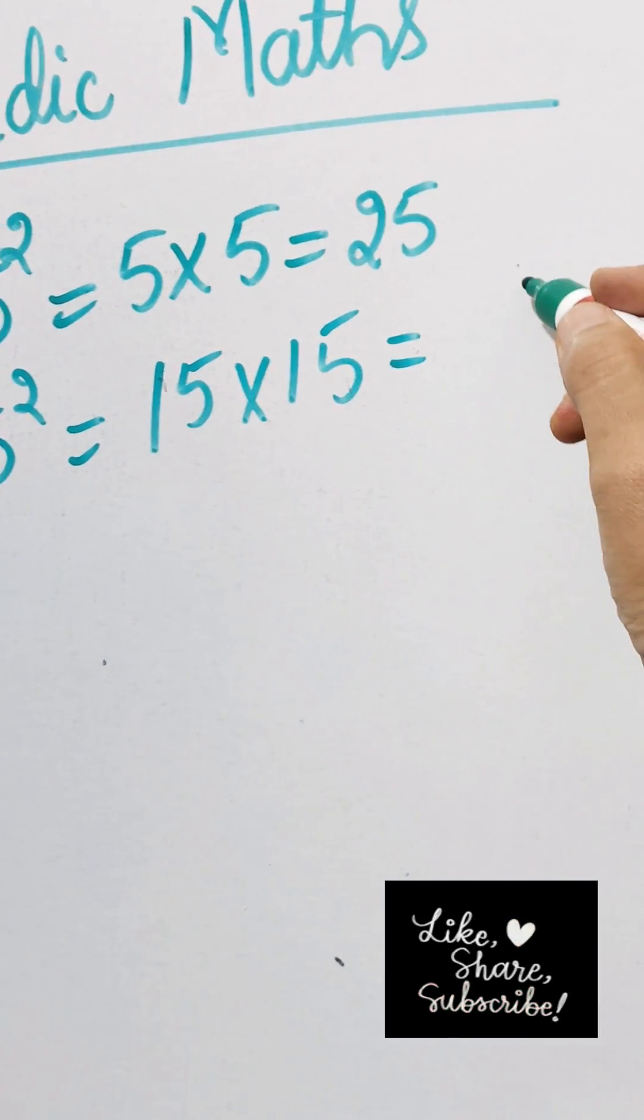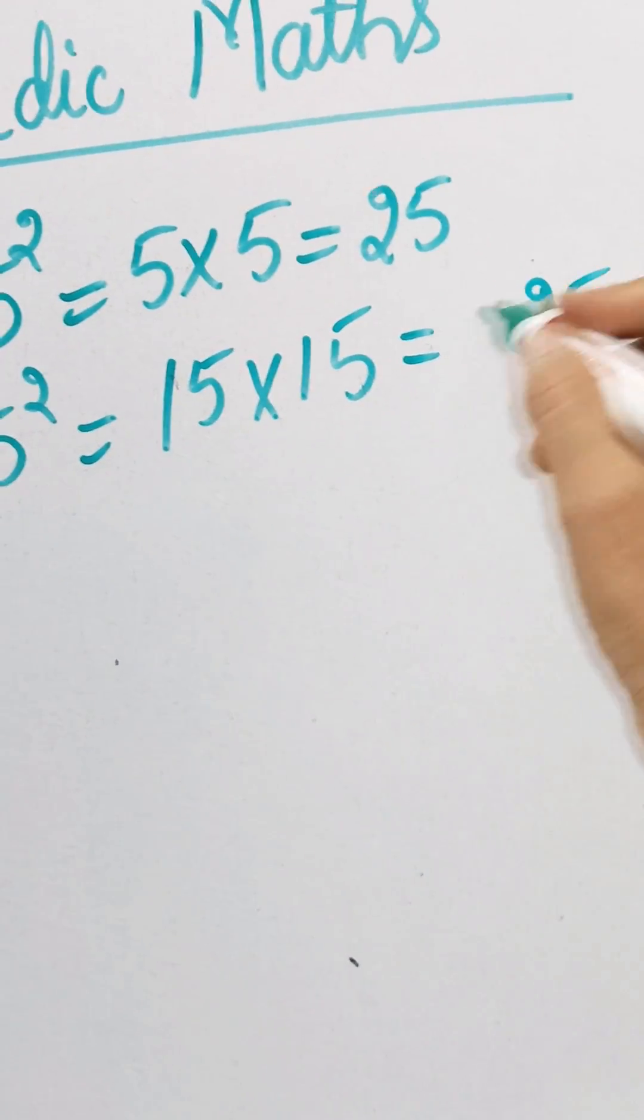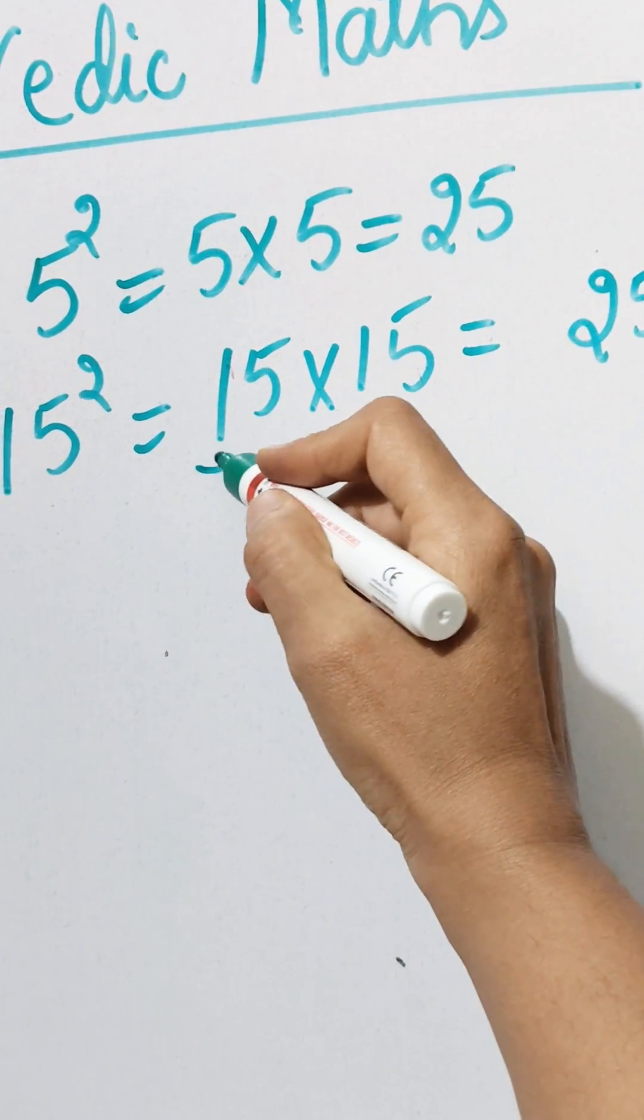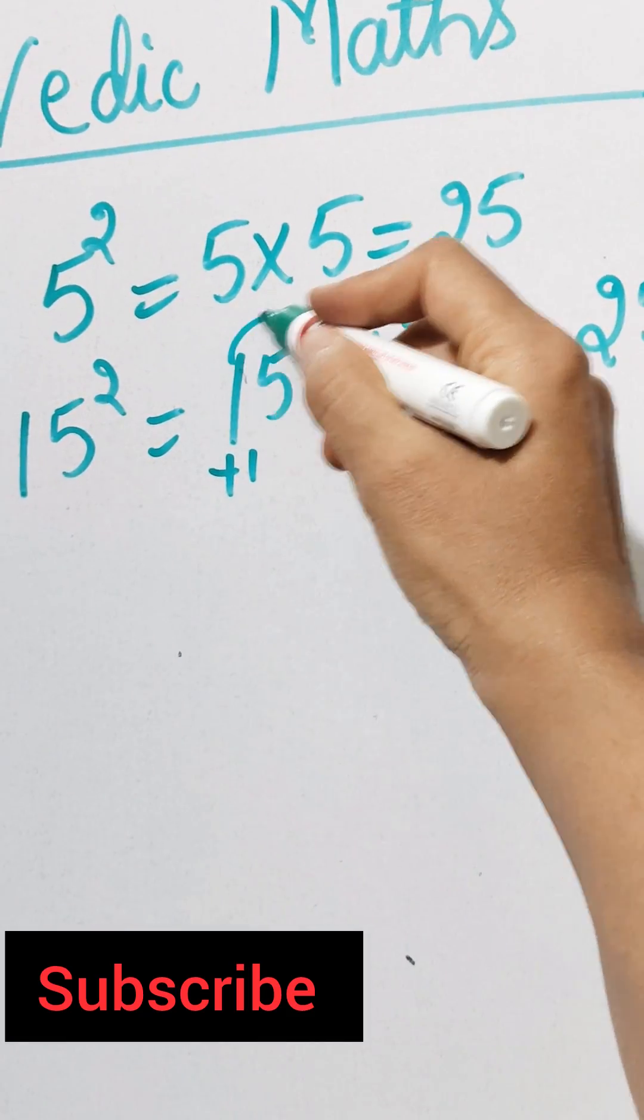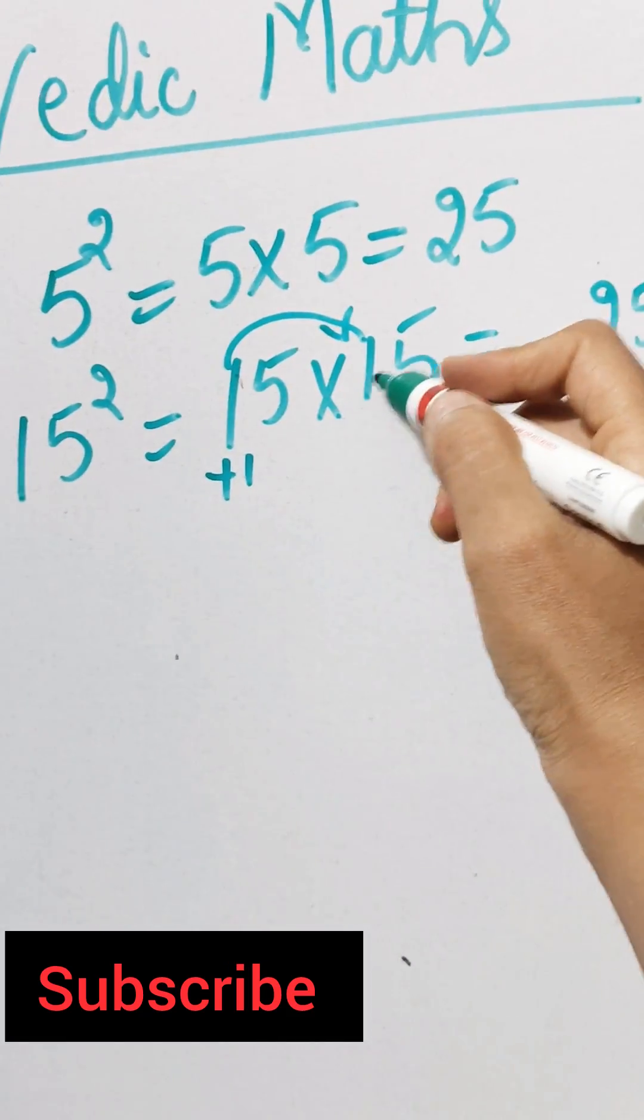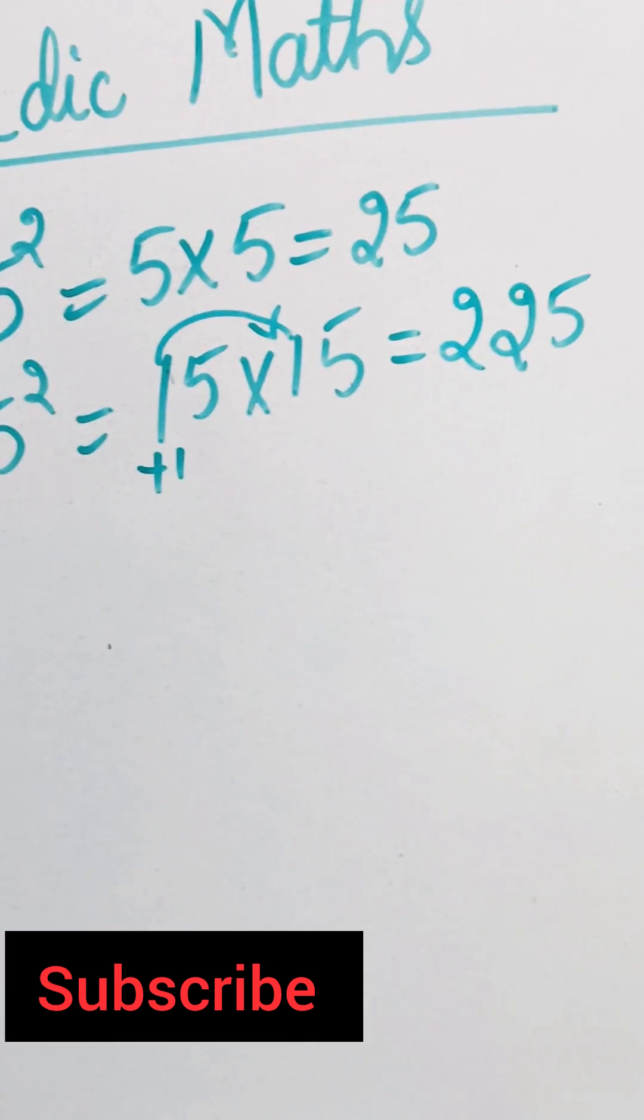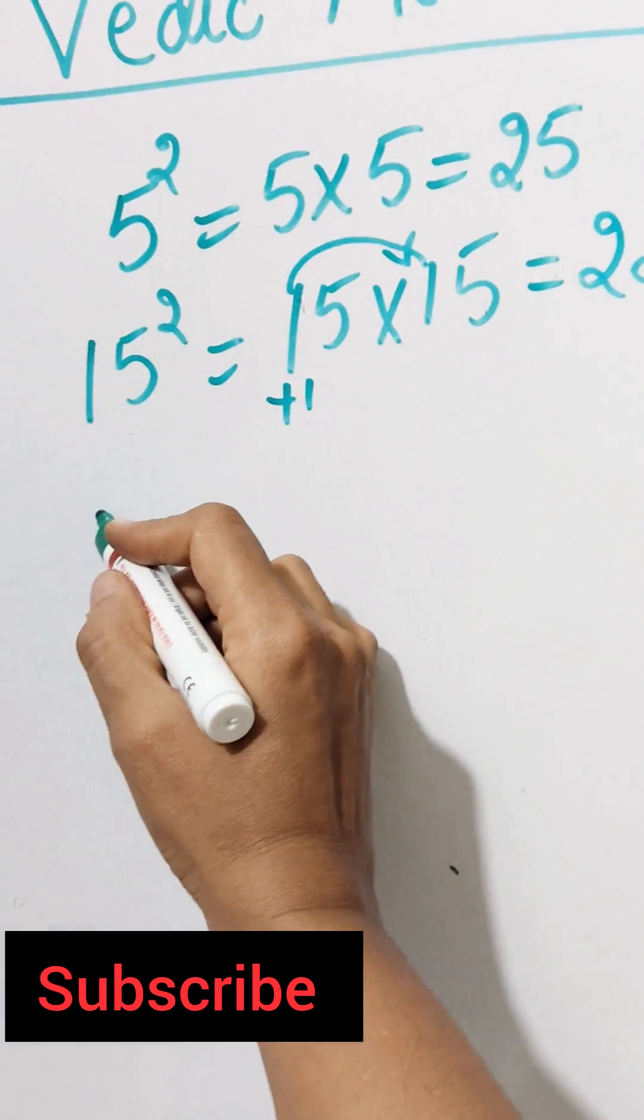5 and 5, which is 25. Then add 1 to this number, so 1 plus 1 is 2. Now multiply 2 into 1, which gives you 2. So the answer is 225. Similarly for 25 square...